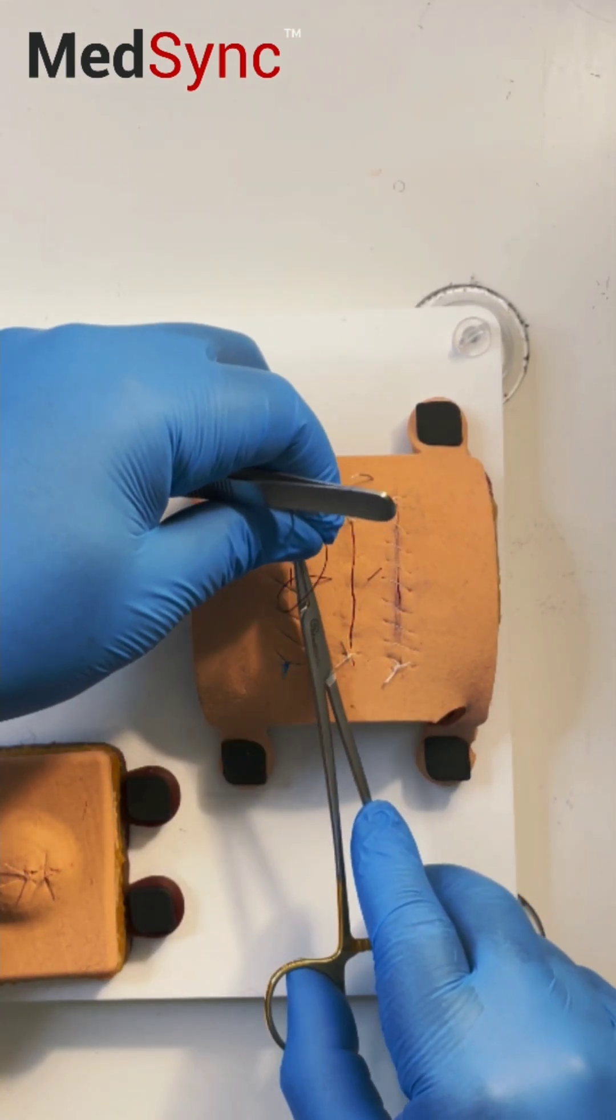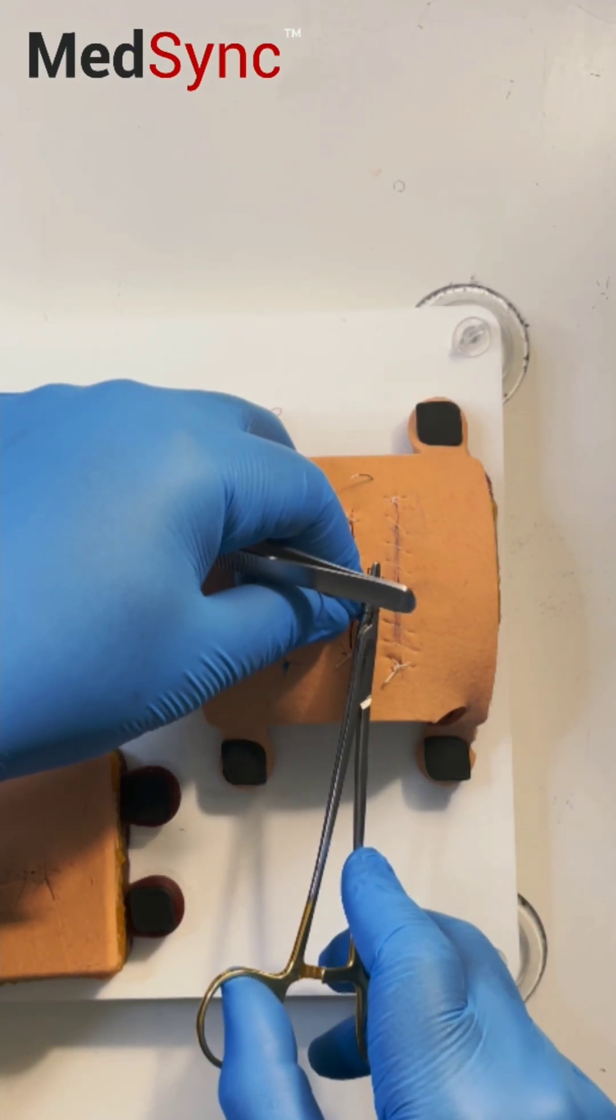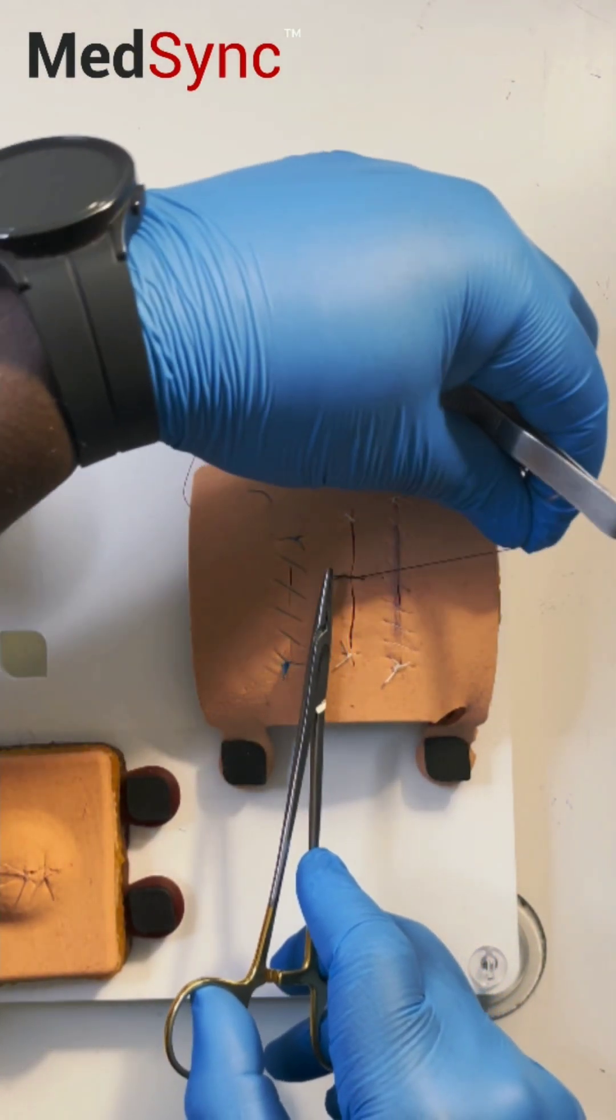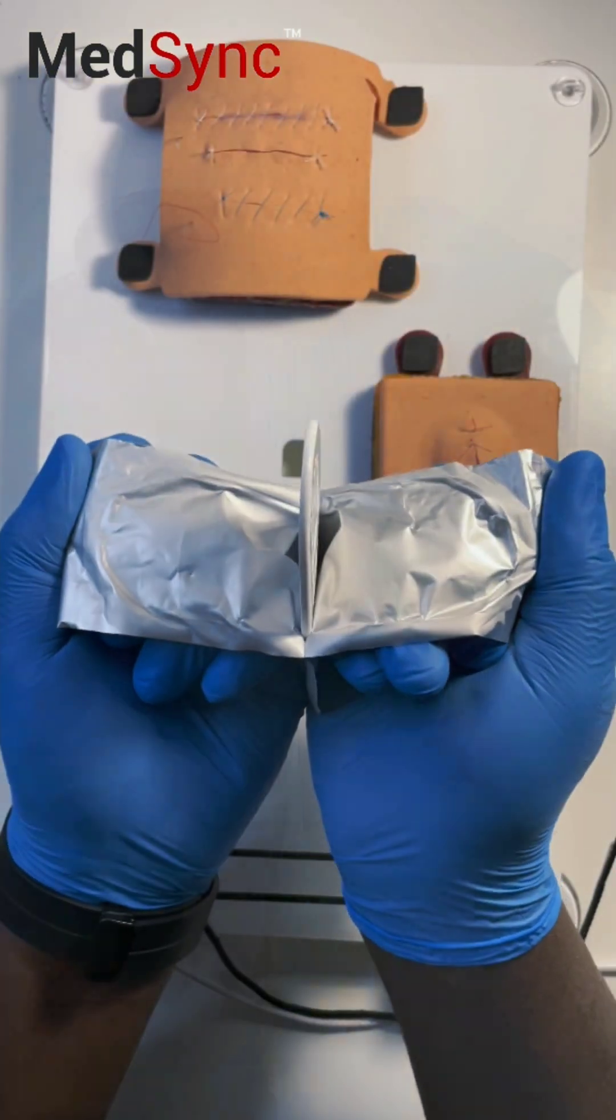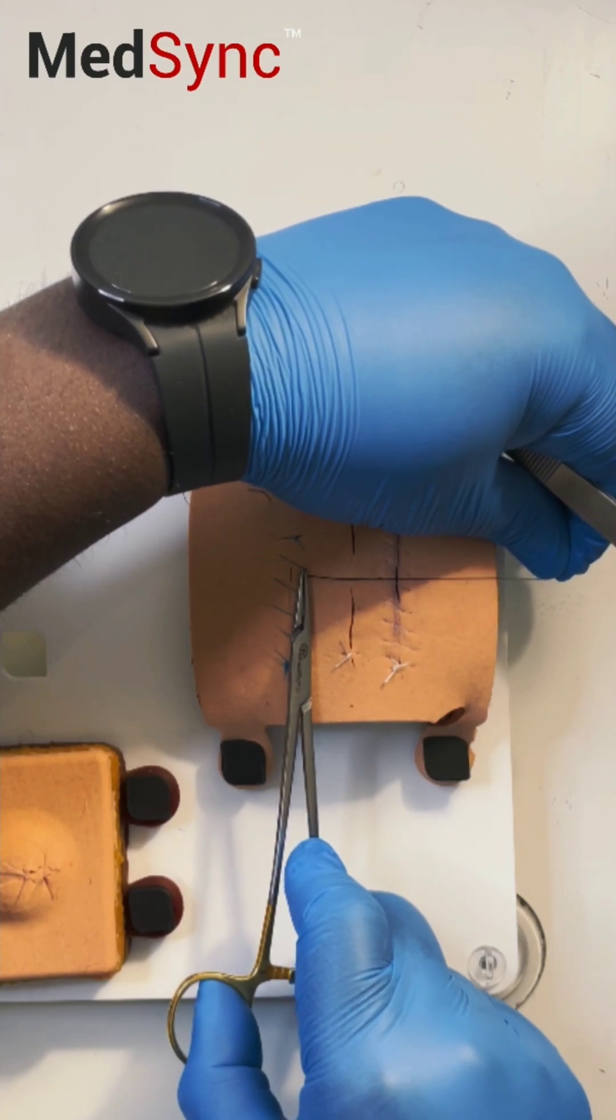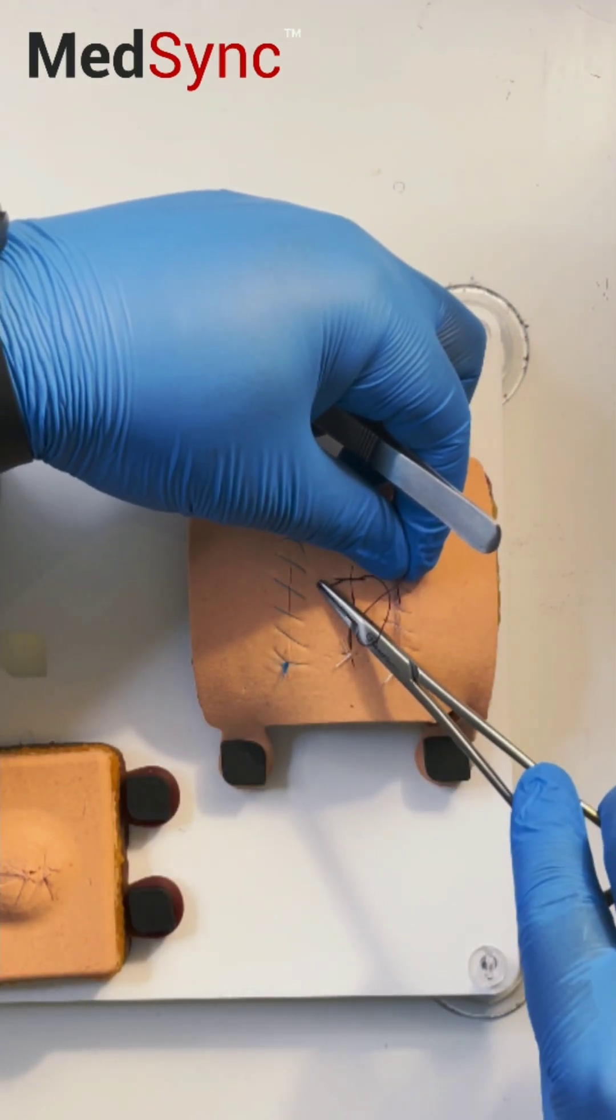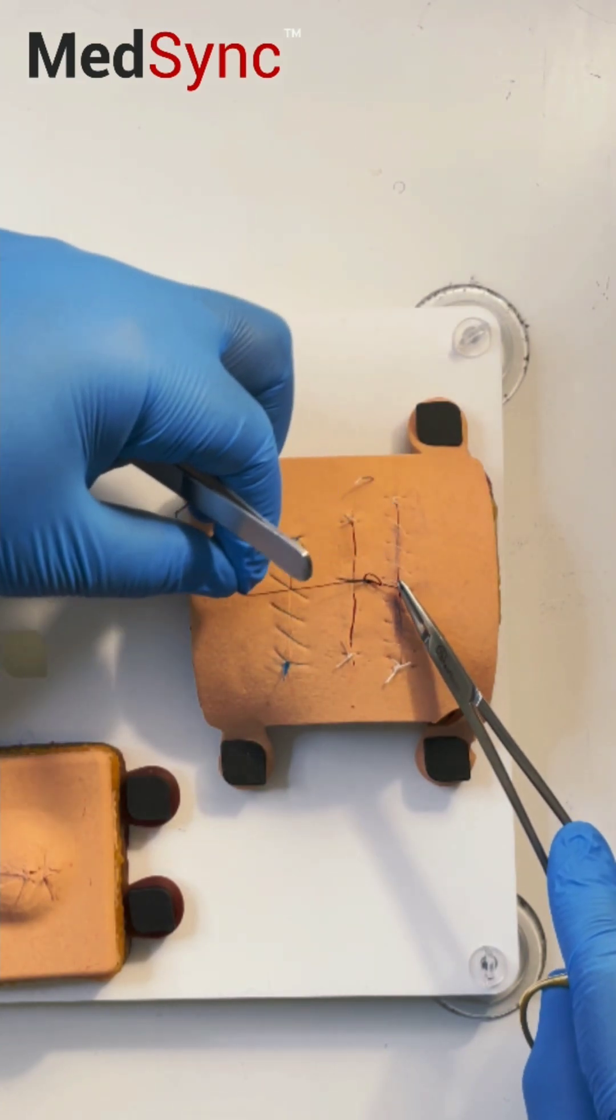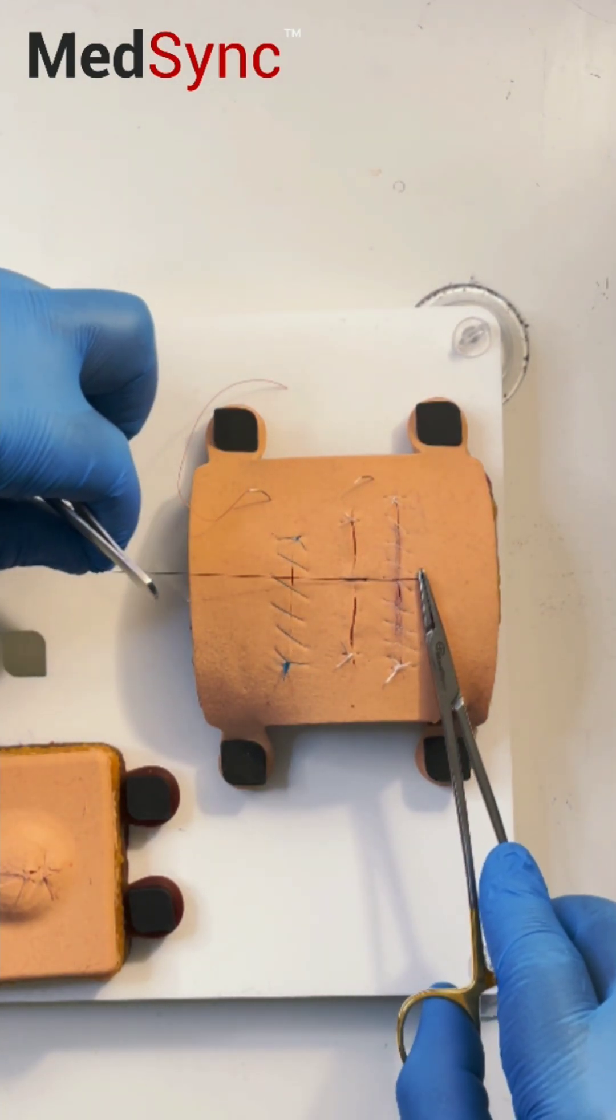Wrap the suture around the tips of the needle holder and lay the suture knot perpendicular, or at 90 degrees, to the wound itself. Now repeat the same steps: wrap it around the tip, pull the short end through the loop, and alternate the position of the long and short thread one more time.